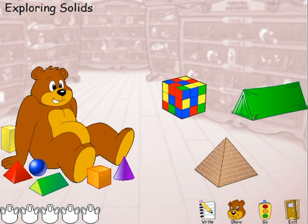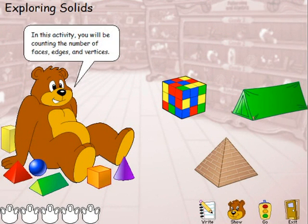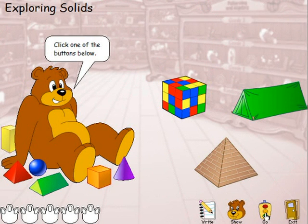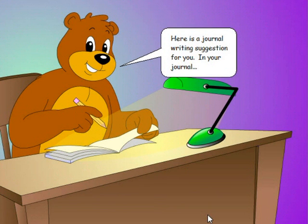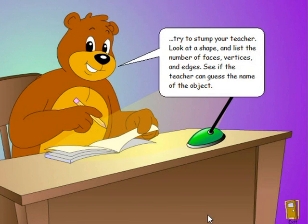We have the buttons at the bottom again, but we're not going to click on Go. I want to show you an extra icon — our Write icon. It is a journal writing suggestion for the students, especially for students who are fast in class and who need more extension. If I click on the journal, I get a suggestion: 'In your journal, try to stump your teacher. Look at a shape. List the number of faces, vertices, and edges. See if the teacher can guess the name of the object.' Then let's go back to the exercise.